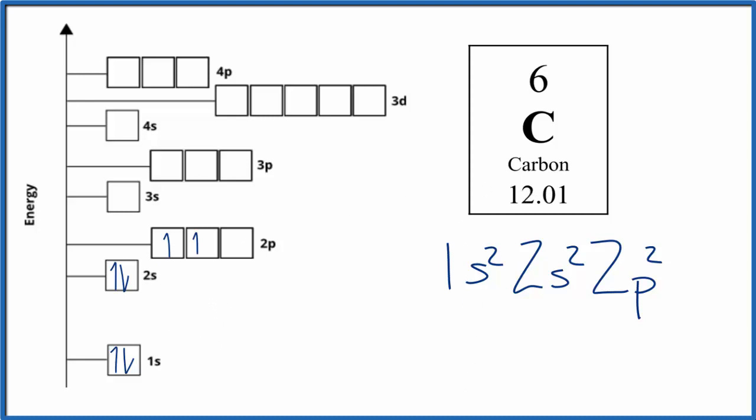You'll also see it written this way, so we have our 1s2, we have the two electrons, 2s2, two electrons, and then 2p2, one, two, spread them out. And this is another way that you can write the orbital diagram for carbon. They all represent the same thing: the arrangement of electrons around the nucleus of the carbon atom.